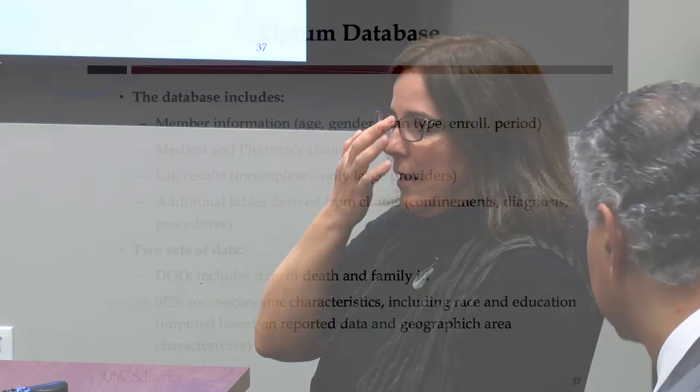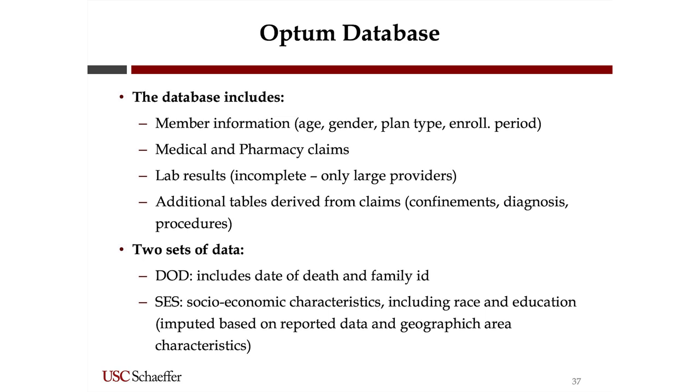There are crosswalk data dictionaries — originally in Excel format, now there's a SAS table with all the definitions for the codings used in the tables. One important thing to know is that there are two different sets of claims: the DOD and the SES. The DOD has a date of death in the member tables and a family ID, useful if you want to look into families, but they don't have any socioeconomic characteristics. The SES set has socioeconomic characteristics, but they cannot be merged — it's not permitted.